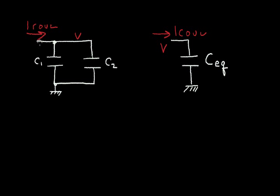When I add the charge to the left side, some of it will go on to C1 and some of it will go on to C2. The larger capacitor will consume most of the charge. So let's see if we can derive an equation for the equivalent capacitor.